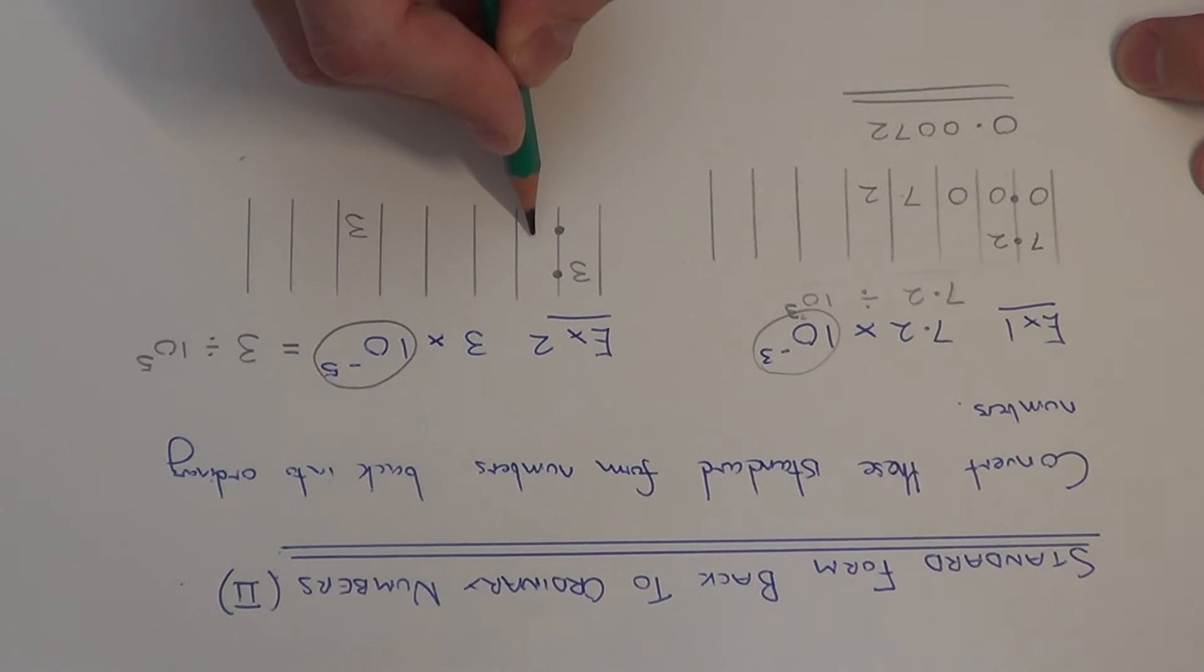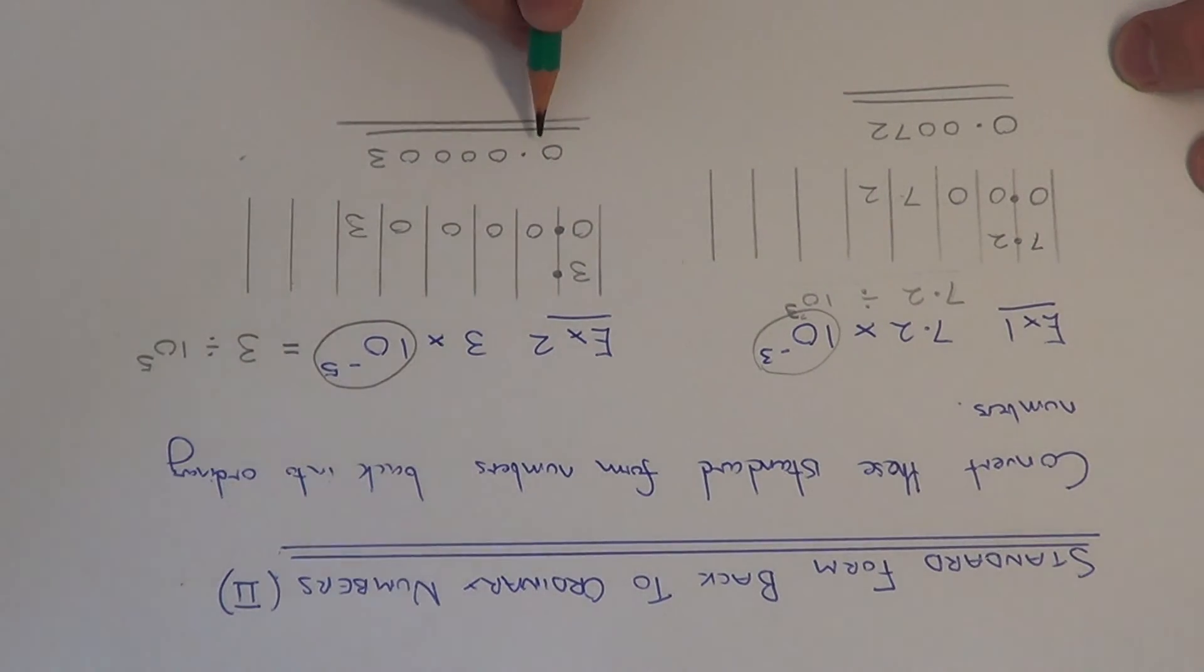And we just need to fill in the gaps with zeros between the decimal point and the number there. And we just need to put the zero before the decimal point. So let's just copy this neatly down again. So we end up with the answer 0.00003. Thanks for watching.